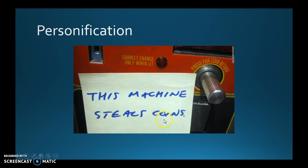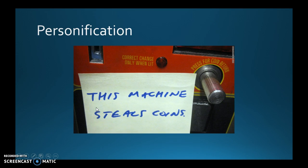'This machine steals coins.' You're assigning the human characteristic of stealing. It can't really steal coins — it's a machine; it's just broken, not doing what it's supposed to. Stealing indicates intention. So giving a human or 'alive' characteristic to something that is not alive — that would be personification.